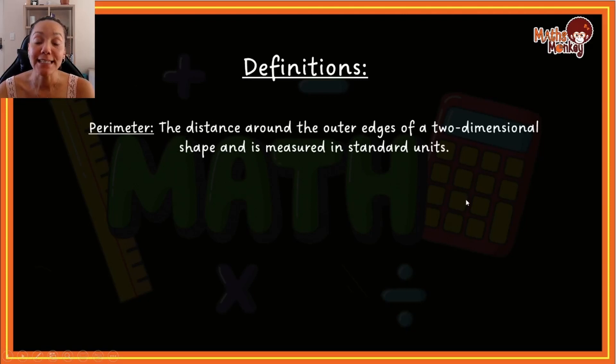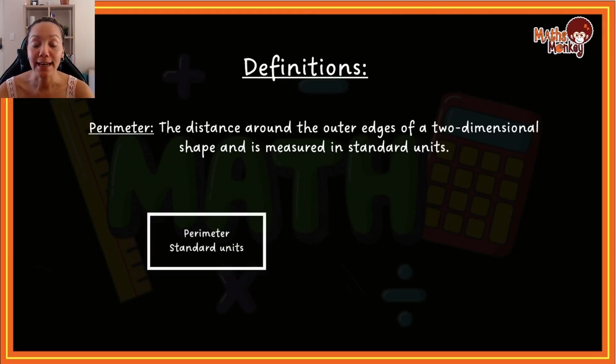Perimeter is when you are calculating the outer edges of a two-dimensional shape and is measured in standard units. In other words, if I were to take a rectangle and I'm going to add all four sides together, just the lengths of the outside sides, that is then my perimeter. If this is in centimeters, then that means my final answer will also just be in centimeters. So that's perimeter.